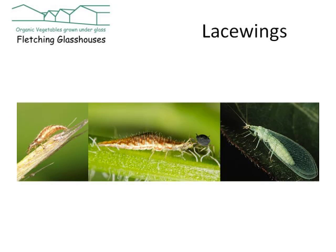Another natural predator we can use, which is also a native species, are these beautiful lacewings. The insects can be effective either as the adult form on the right or as the larval form — you can see a larva having a snack of a blackfly. These are more expensive than cheap remedies like washing up liquid or soft soap, but they do have the advantage of rebuilding the natural balance between predators and prey, which is beneficial for the environment generally.